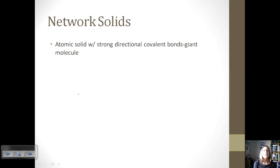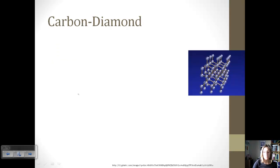Network solids are basically an atomic solid with a strong directional covalent bond. So it's this really big, giant molecule. Some properties, they are very brittle. They will not conduct heat or electricity. And so we're going to look at the two main types, carbon-based ones and then silicon-based compounds.